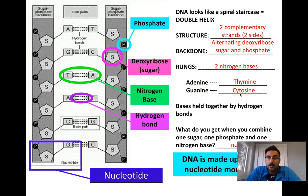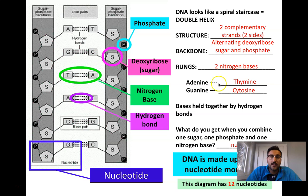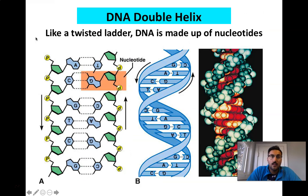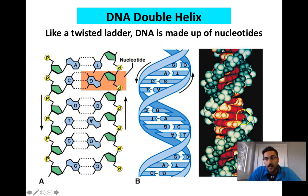When you combine one sugar, one phosphate, and one nucleotide base, you get a nucleotide. Here we've got 12 nucleotides — six on each side. DNA looks like that twisted ladder: you can open it up in a diagram, show it spiraled, or see it in a computer rendering.